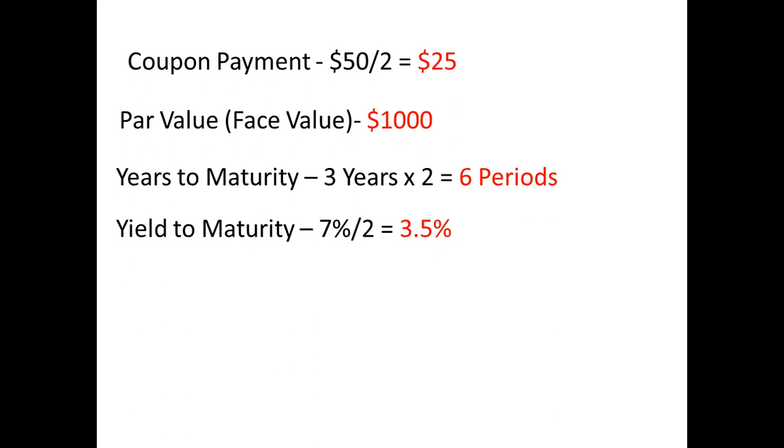So now we have our information. We have a par value of $1,000, a yield to maturity of 3.5%, coupon payments of $25, and periods to maturity of 6.